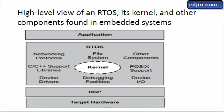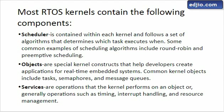For now, let's look at a typical application, which has specific code for your application requirements and uses objects from the kernel and other RTOS components. Let's divide the RTOS kernel into three main categories: scheduler, objects, and services. The scheduler runs in the critical part of the OS and gets a chance on every tick cycle. Common scheduling algorithms include round-robin and preemptive, depending on your RTOS and application needs.